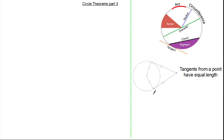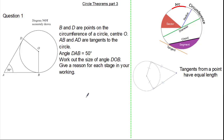So let's apply this theorem to a question. The question states that B and D are points on the circumference of the circle with centre O. We know AB is a tangent and AD is a tangent. We're also given the angle DAB as 50 degrees. We're asked to work out the angle DOB and give a reason for each stage in our working out.